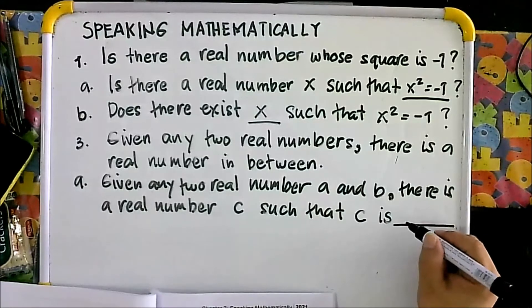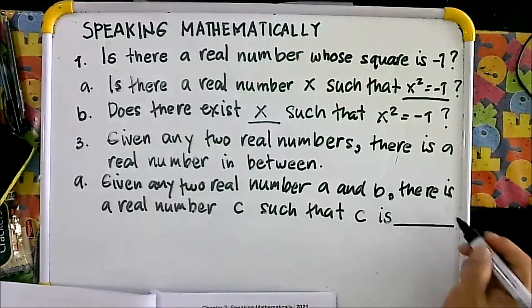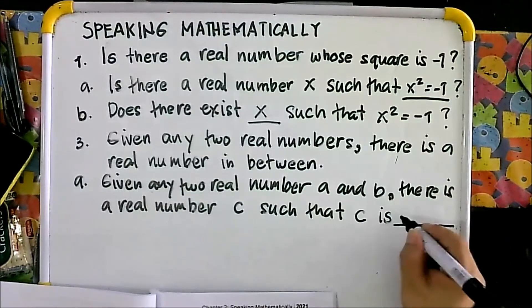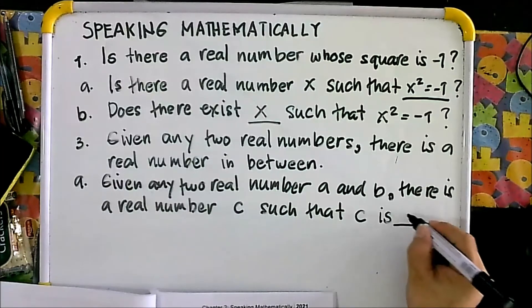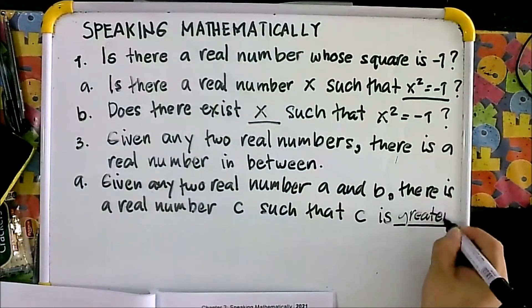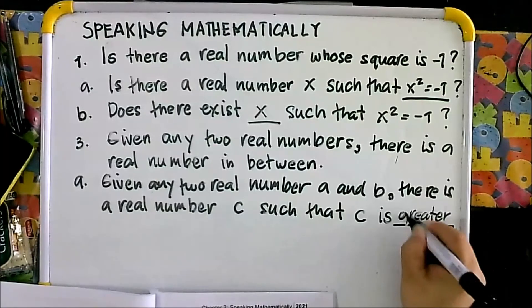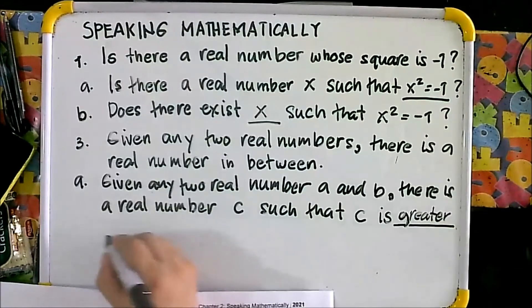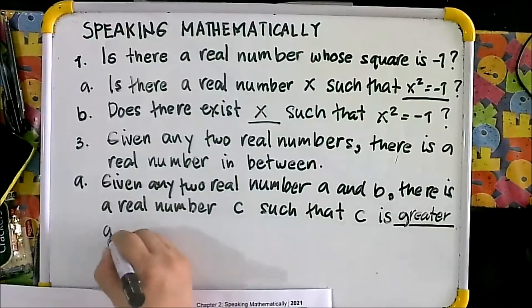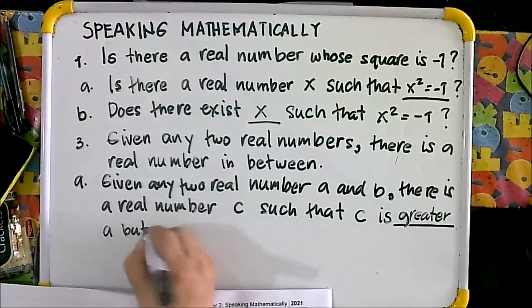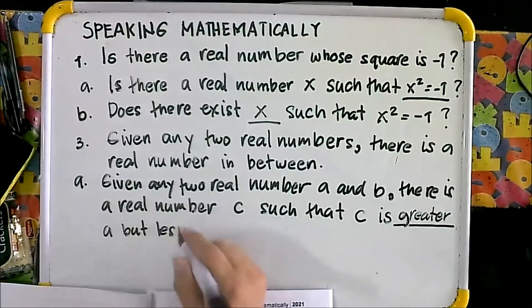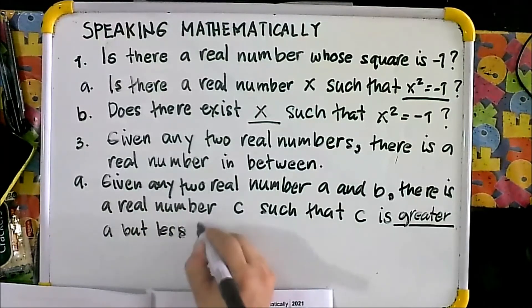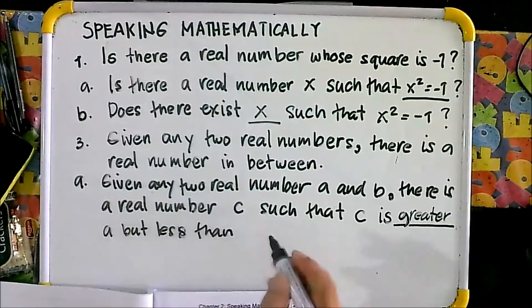C is greater than A and less than B. So your answer will be: C is greater than A but less than B.